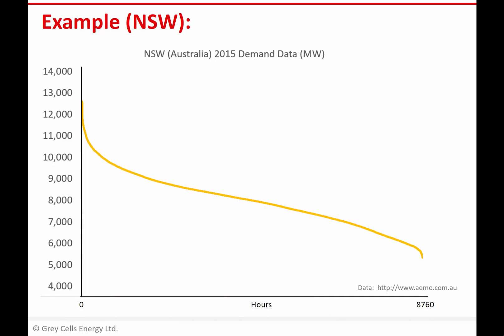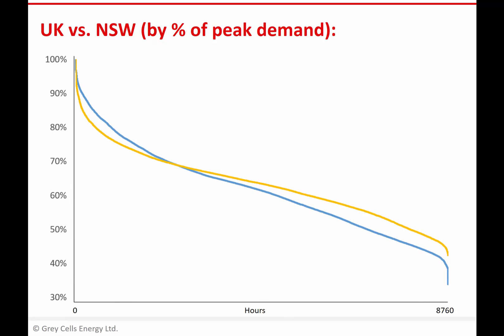Here's the load duration curve for 2015 for the New South Wales region of Australia — a very similar shape with a very steep uptick towards the peak values. So those peak values above 11,000 megawatts occurred for very few hours during the year. Given the different scales of the UK versus New South Wales, an easier way to compare the two load duration curves is to plot them not in absolute values but in terms of percentage of peak demand. The two curves converge at 100% of peak demand, but the New South Wales curve is much steeper than the UK one for those few hours towards the left where we have peak demand values.